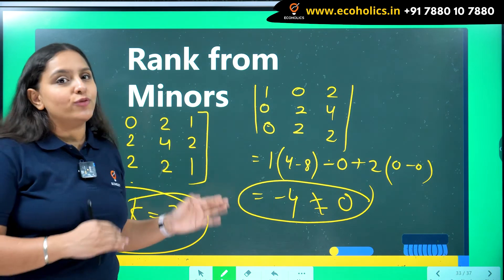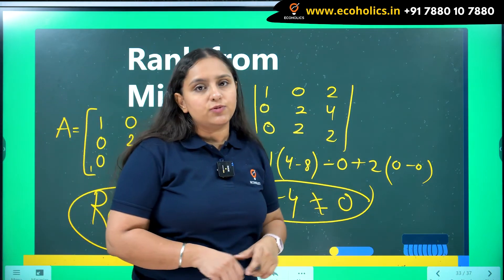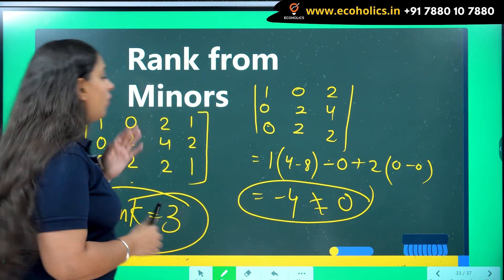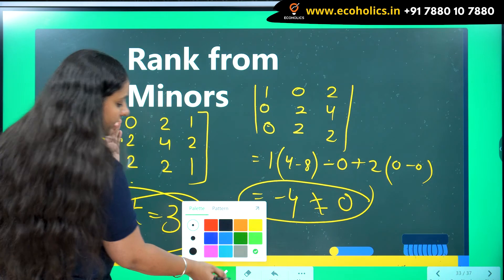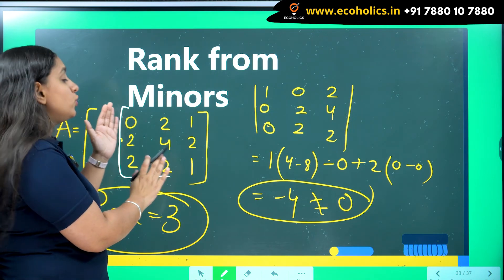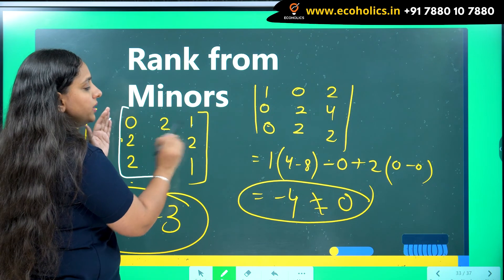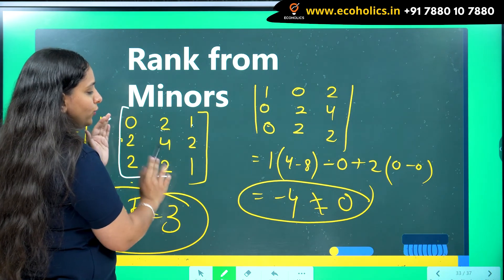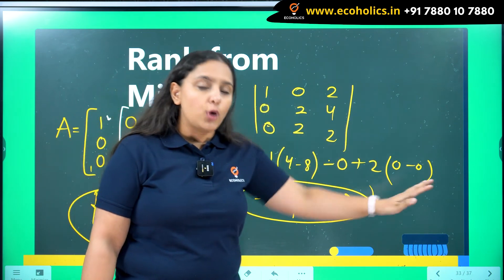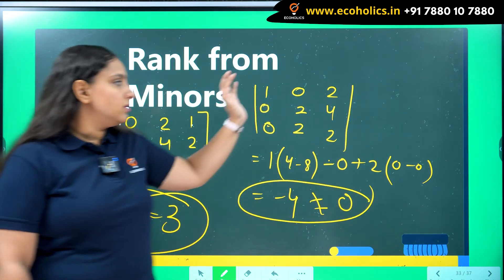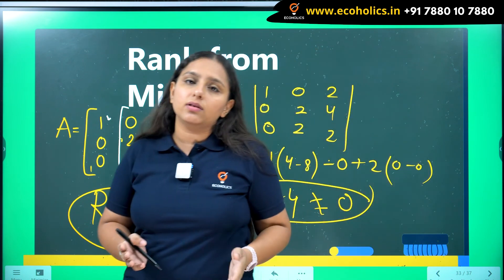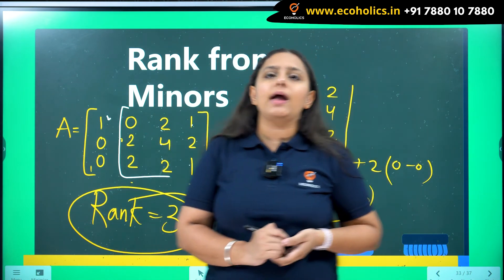This took us some time because it was the first time, but with practice you can use properties of determinants to work faster. For example, when I left the first column, I could immediately see that column 2 and column 3 were exact multiples of each other — so I already knew that determinant would be zero. By just using properties of determinants, you can quickly observe whether a minor will be zero or not.